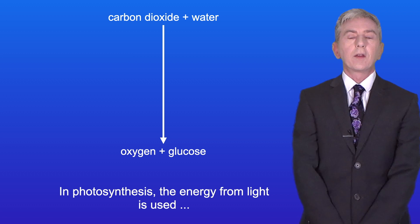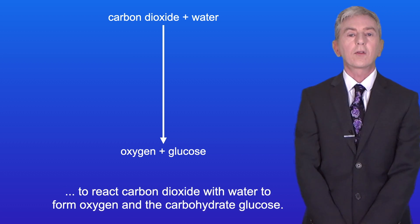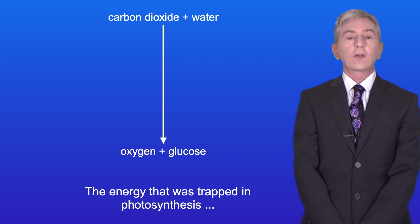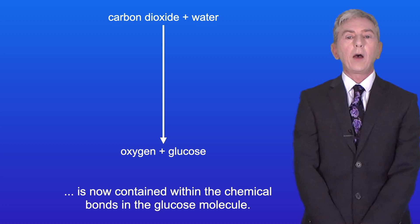In photosynthesis, the energy from light is used to react carbon dioxide with water to form oxygen and the carbohydrate glucose. The energy that was trapped in photosynthesis is now contained within the chemical bonds in the glucose molecule.